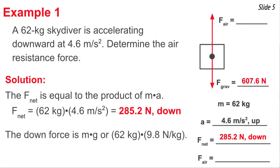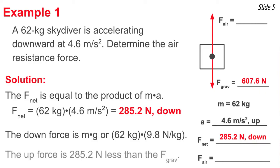Now that we have the net force, let's find the gravity force. We take the mass, 62, and multiply it by g, 9.8 Newtons per kilogram, getting a downforce of 607.6 Newtons. The net force being 285.2 Newtons down tells us that the downforce is 285.2 Newtons more than the upforce, meaning the upforce is 285.2 Newtons less than the downforce. So by subtraction, we can figure out the air resistance force to be 322 Newtons.